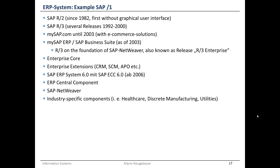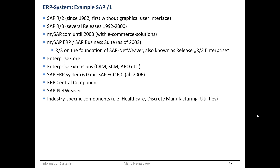After R3, there followed some generations of other SAP versions, like the MySAP version until 2003. It was more focused on e-commerce solutions, somewhat related to the new economy phase. Nowadays we are working with ERP version 7, which still has an essential ERP component.